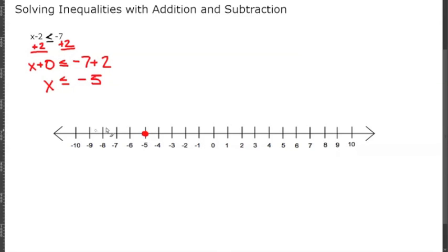Since x is less than negative 5, we shade in everything to the left. Remember: if it's less than, you shade to the left; if it's greater than, you shade to the right. So x is less than or equal to negative 5.